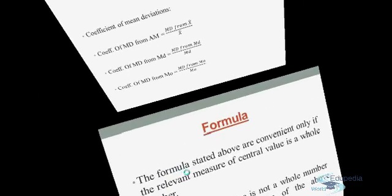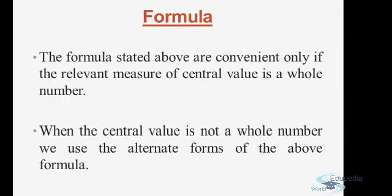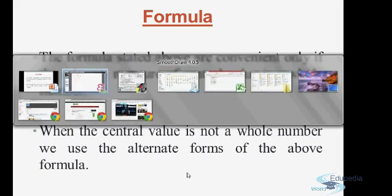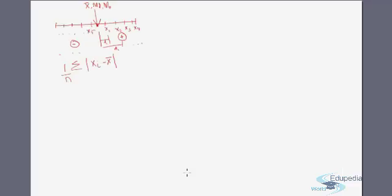Now we have an alternate formula. The formulas stated above are convenient only if the relevant measure of central value is a whole number. What if we have a decimal? When it is not a whole number, we use the alternate formula — it is the same formula but worked in a way that makes calculation easier when the numbers are decimals.